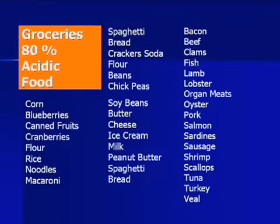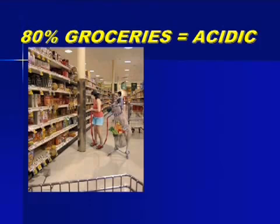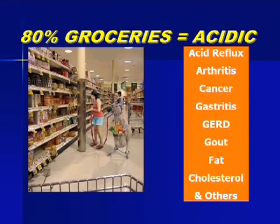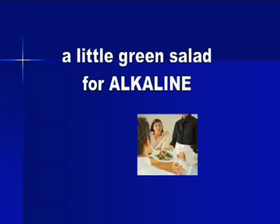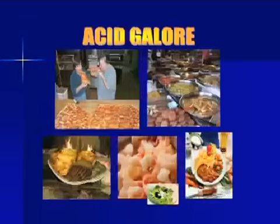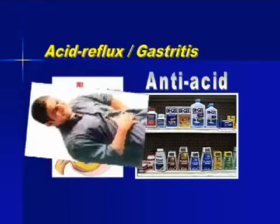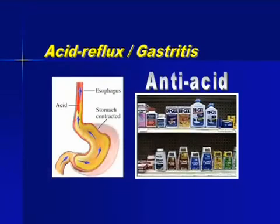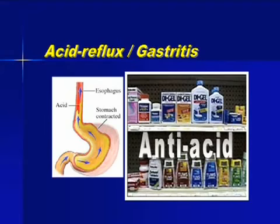The problem is that many of us eat too much acidic food and drink too much acidic drinks. Eighty percent of the groceries we buy are acid-forming foods, which contribute to body acidity and to the development of health problems like acid reflux, arthritis, gastritis, and gout — which is caused by too much uric acid. When we eat at a restaurant, we usually have a little serving of green salad for alkaline, then go to the main course which is acid galore. No wonder there is such demand for anti-acid medicines like Tums, Rolaids, Digel, and Pepto-Bismol — people take them like candies to relieve themselves of too much acid.